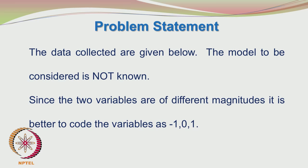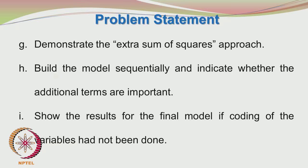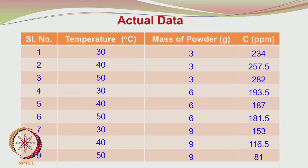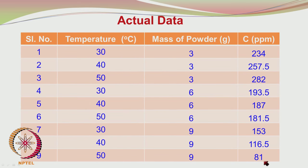Looking at the table, the temperature of water is kept either at 30, 40, or 50 degrees. In the first 9 readings, the amount of powder used varies between 3 grams to 9 grams. The data table continues with temperature at 45 and 35 degrees centigrade, mass of powder at 4.5 grams and 7.5 grams, and the concentration in PPM is given in the last column.